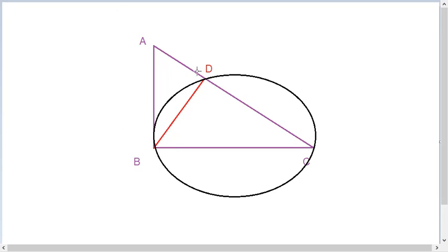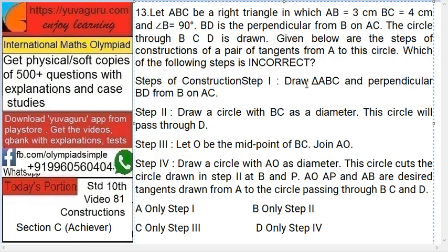Look at the question first. ABC, this is 3, this is 4, and B is 90. Then BD is perpendicular to AC. Now we draw a circle through B, D, and C. Now we have to draw tangents from A to this circle. So that is the question.